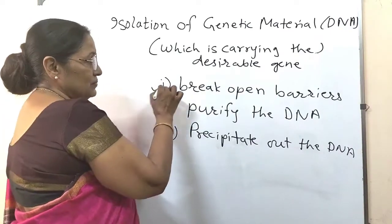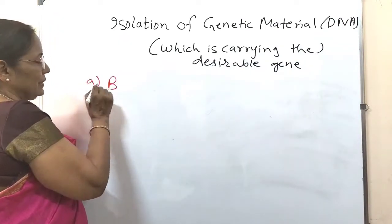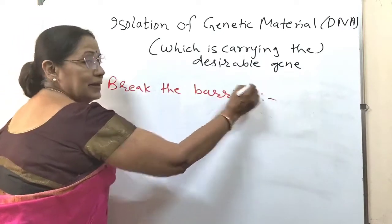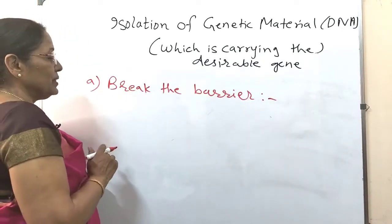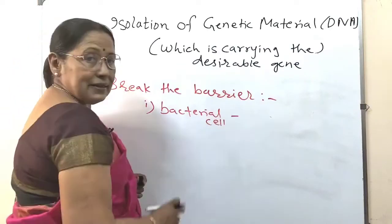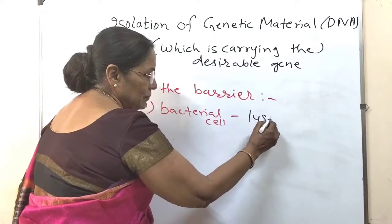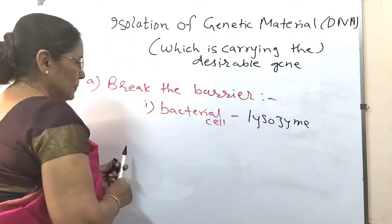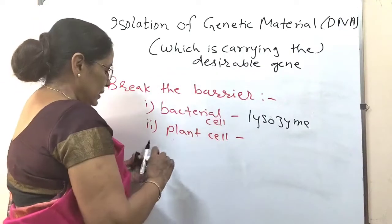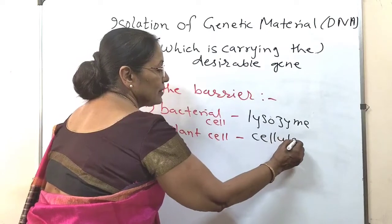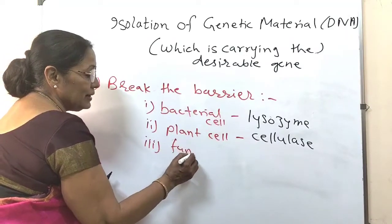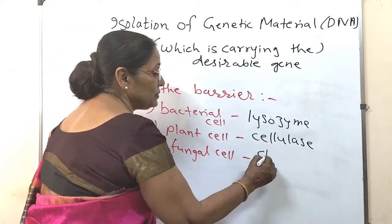To break the barriers enclosing the DNA — the cell wall and cell membrane — we use specific enzymes. If it is a bacterial cell, we use lysozyme. If it is a plant cell, since plant cells contain cellulose, we use cellulase. If it is a fungal cell, since fungal cells contain chitin in their wall, we use chitinase.